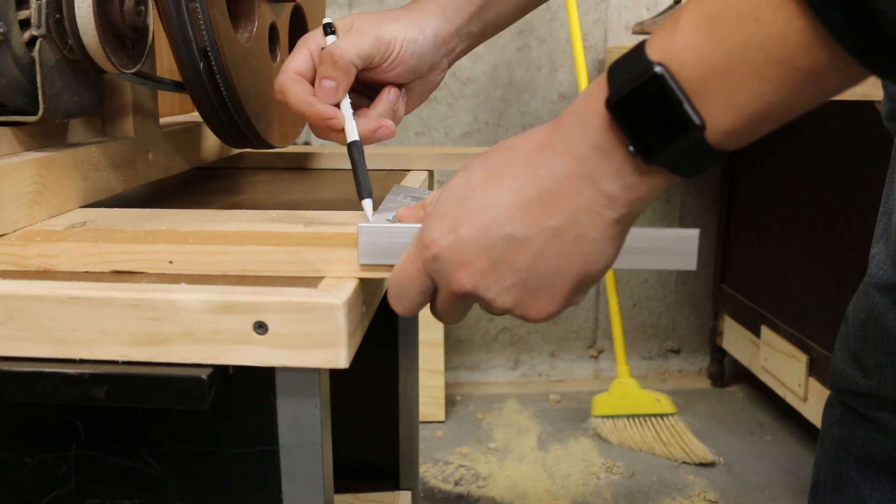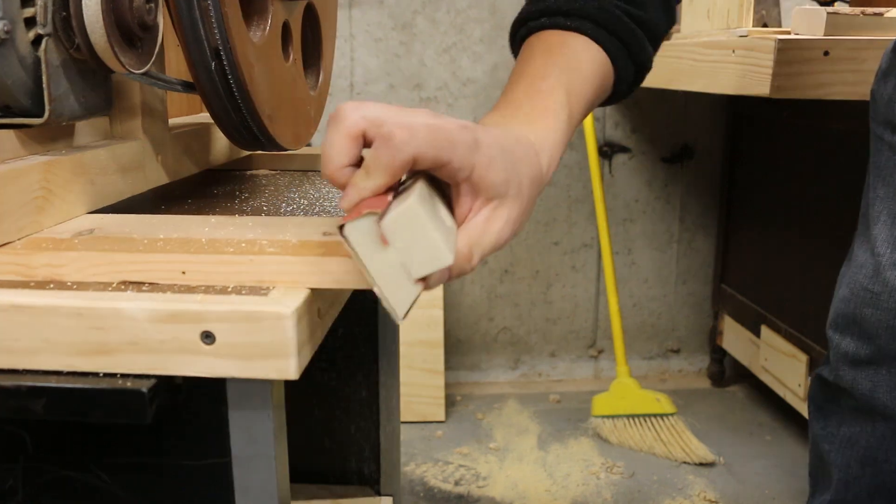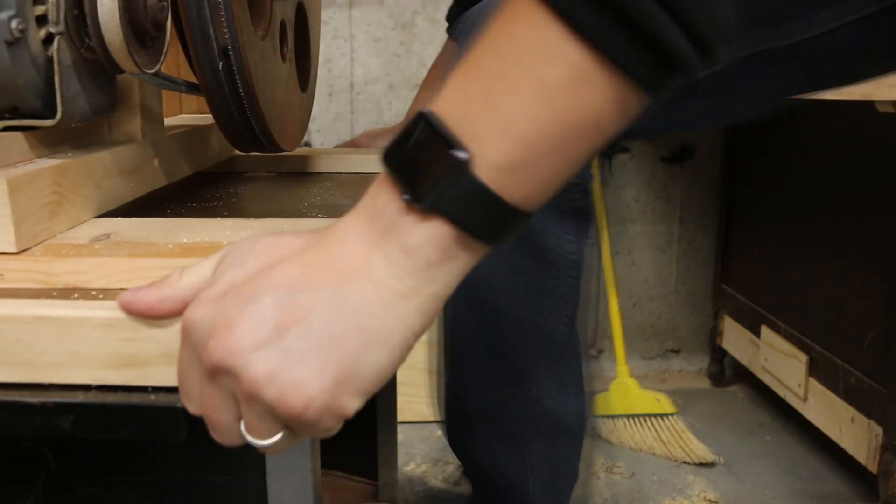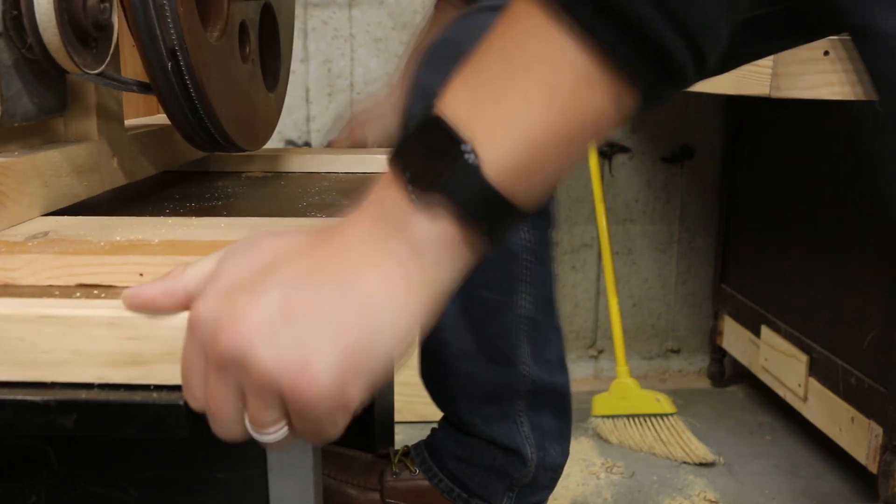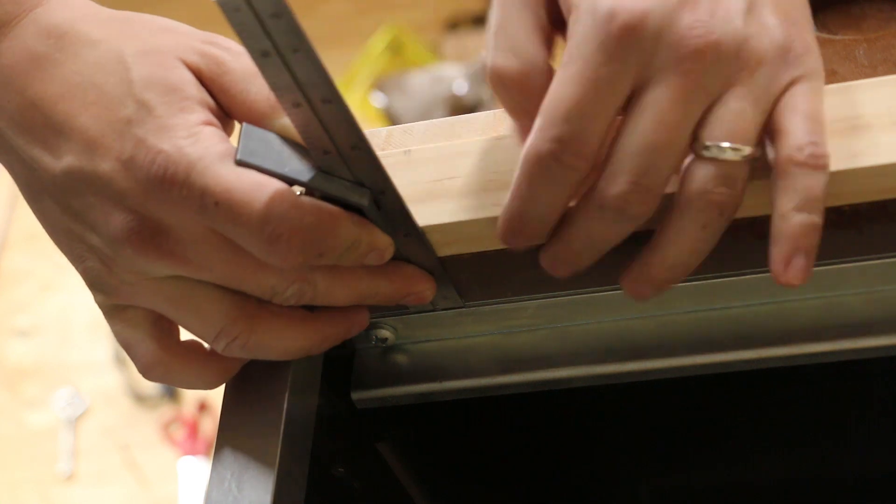These legs stick out over the edge a little bit. So now I'll mark them and trim them. And then I will chamfer the edges a little bit. And I'll drill some holes for bolts. I have to be careful here because I don't want to interfere with this sliding table. So I have to drill on the sides of that.